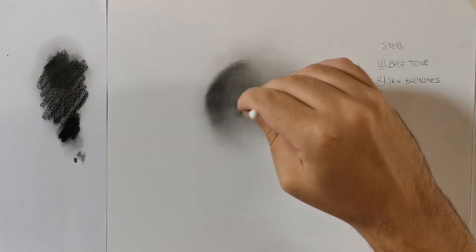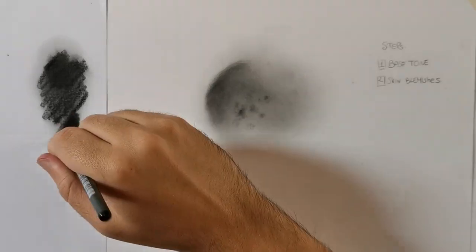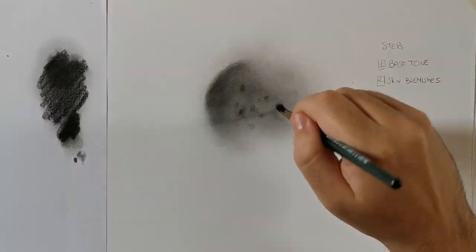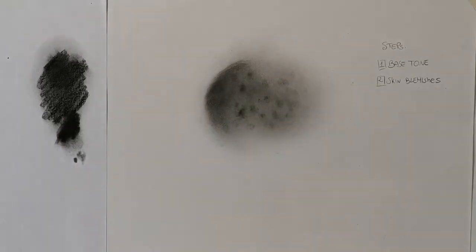Once you have completed the base tone, you can move to the second step: the skin blemishes. I'll use a Q-tip dipped into the deposit to create some random skin spots. This step will increase the perception of realism consistently, so do it and also try to make these spots smooth with a small brush.